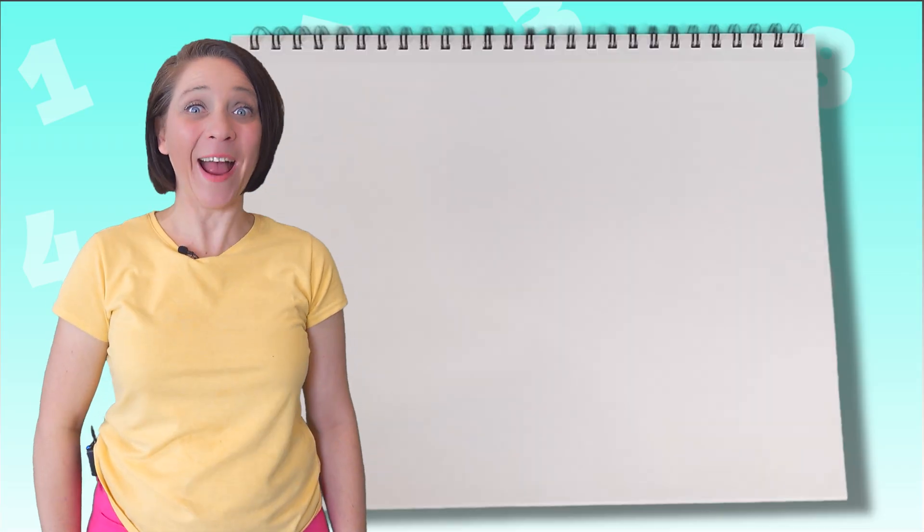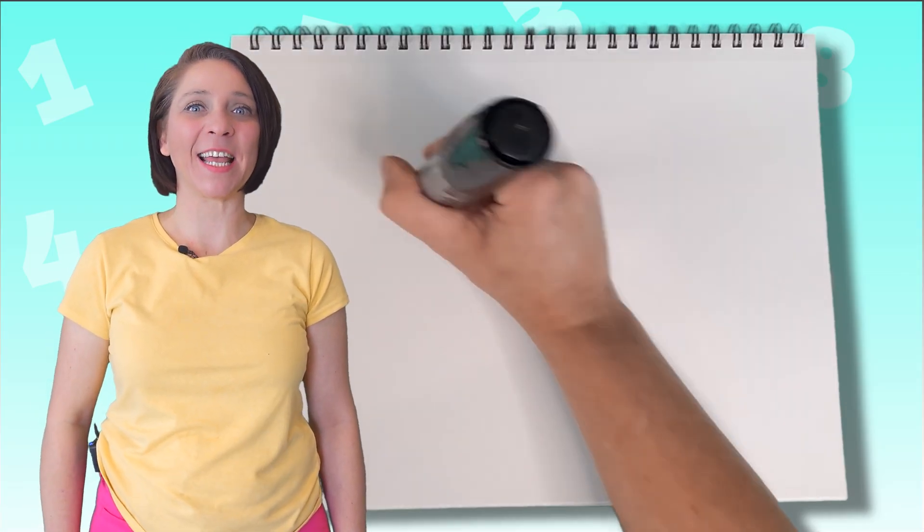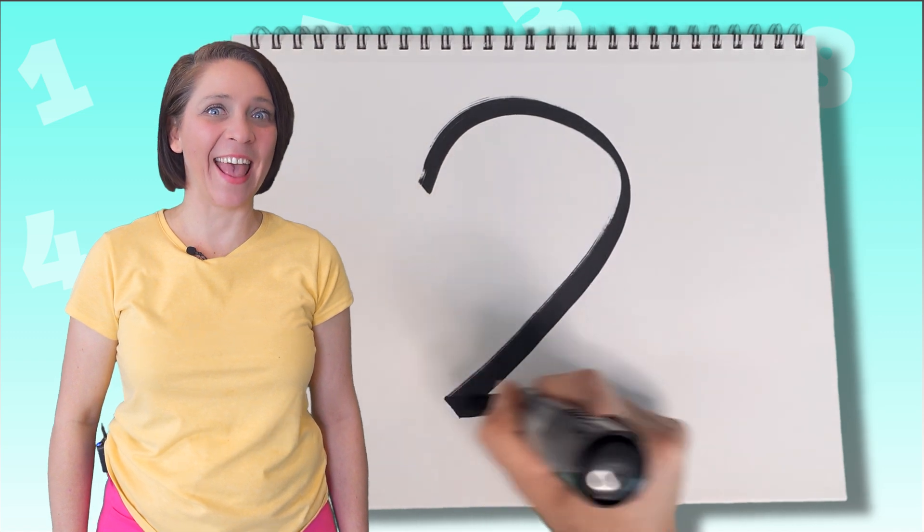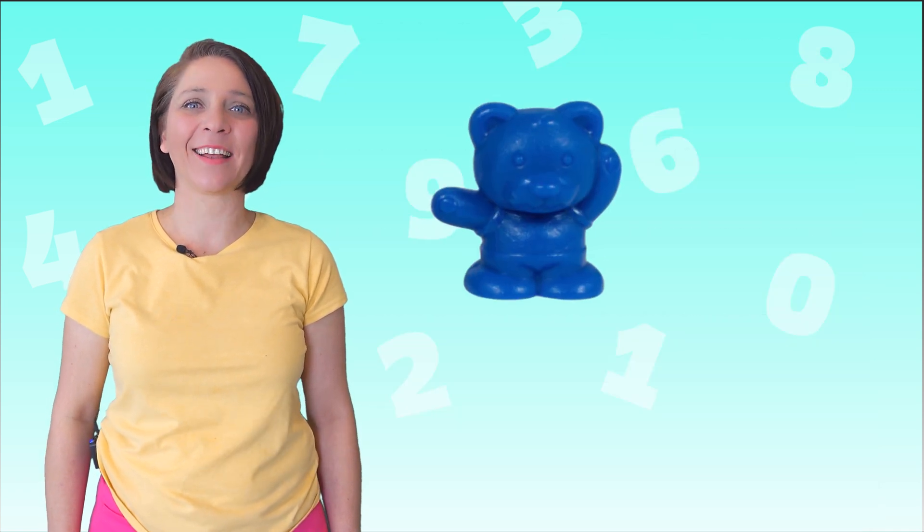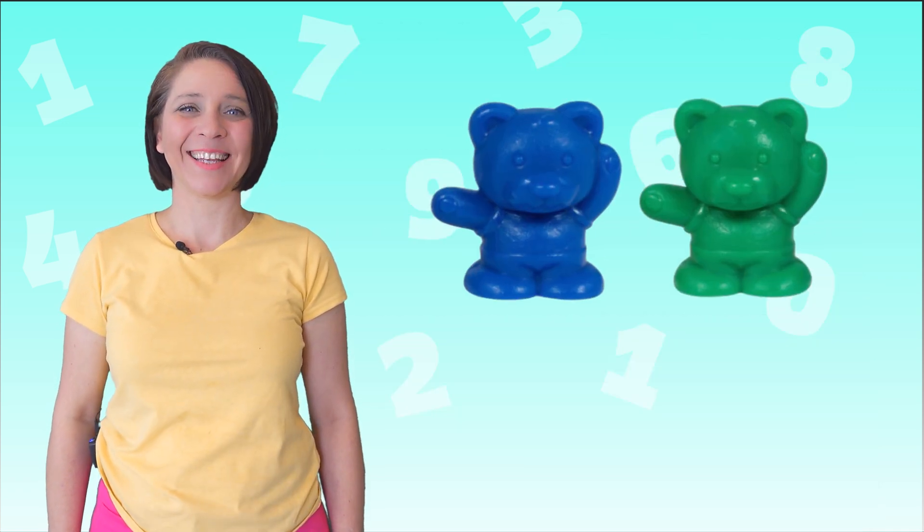What's next? Number two. You're right. Make a candy cane and then a shoe. That's the way to make a two. Let's count to two. One, two. What comes after number two?